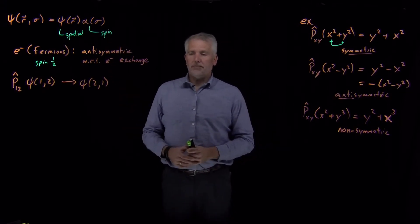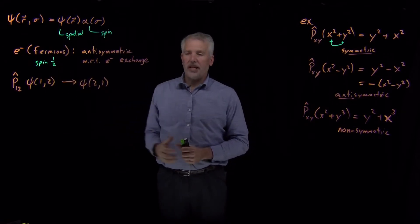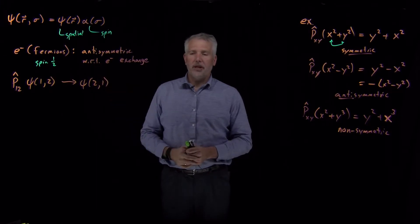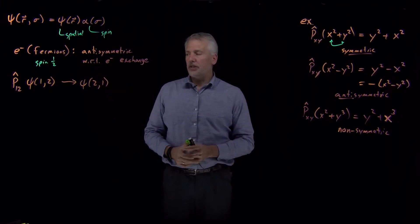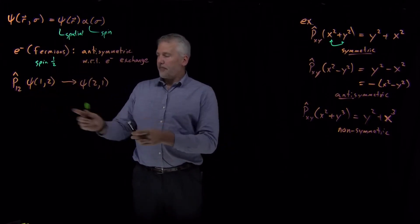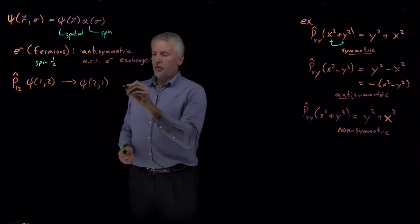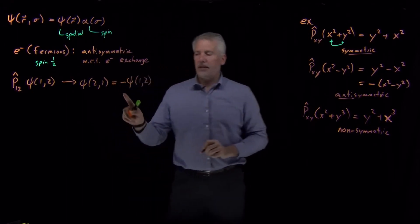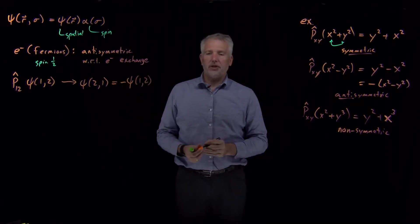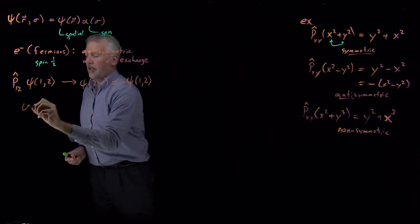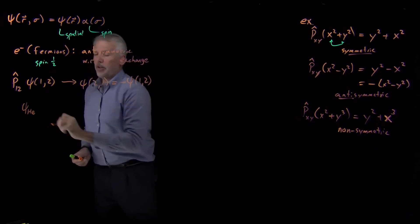Back to quantum mechanics: what the universe tells us is true about electron wave functions is that any electron wave function must be antisymmetric with respect to exchange of the electrons. Since it's antisymmetric, if I exchange variables one and two, I must get back a function that is the negative of the function I started with.